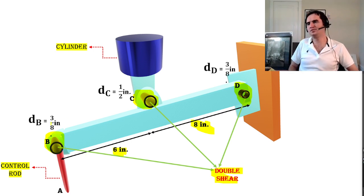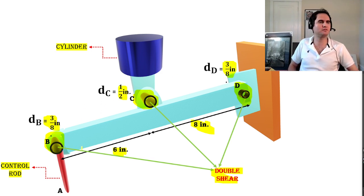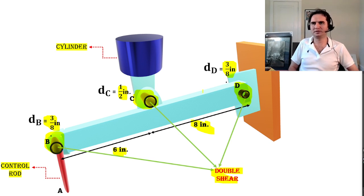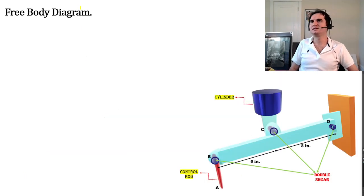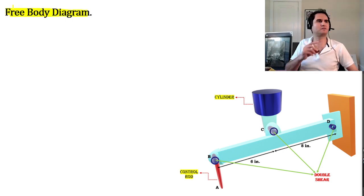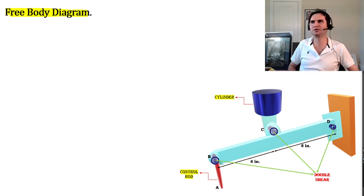From the problem statement, diameters at B and D are identical at 3/8 inches, and the bolt at C which connects the cylinder to the rod has a diameter of 1/2 inch. The very first step in this category of problem is drawing a free body diagram.